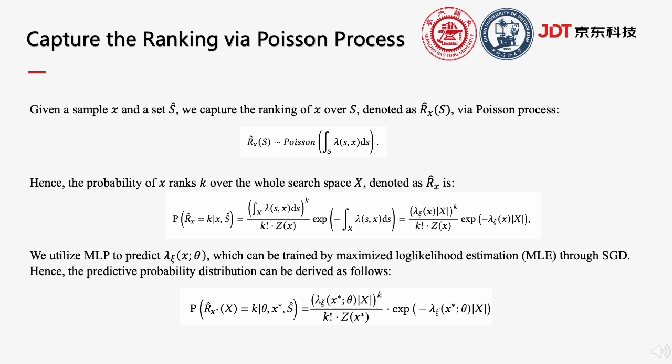In this work, we assume the rankings of x over two disjoint areas are independent since the function f is black box, and propose to model the ranking of x over a set S as a Poisson process. The probability of x ranking k over the whole search space X is derived as the second equation.